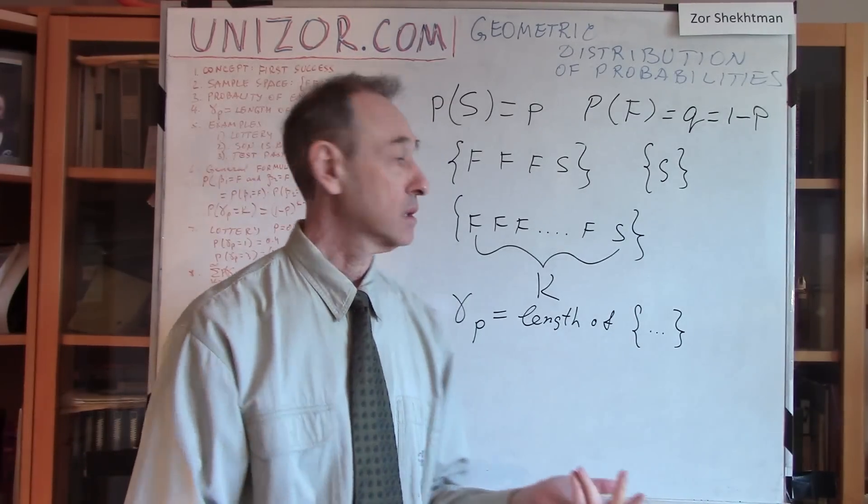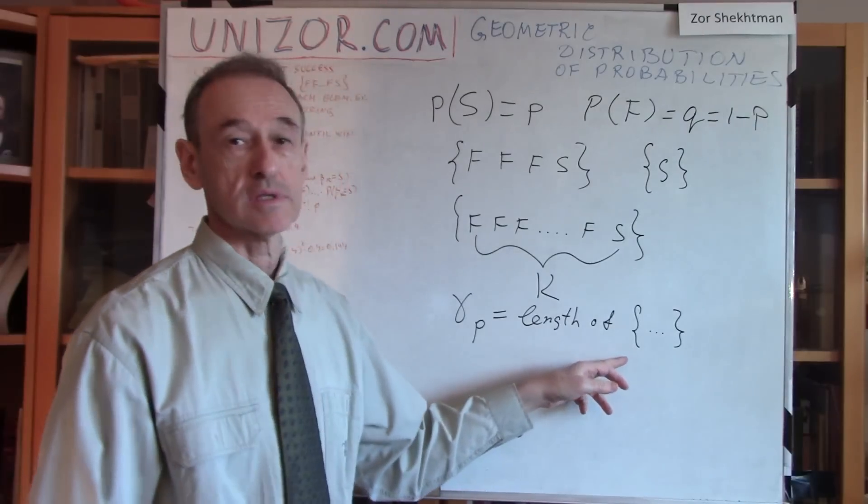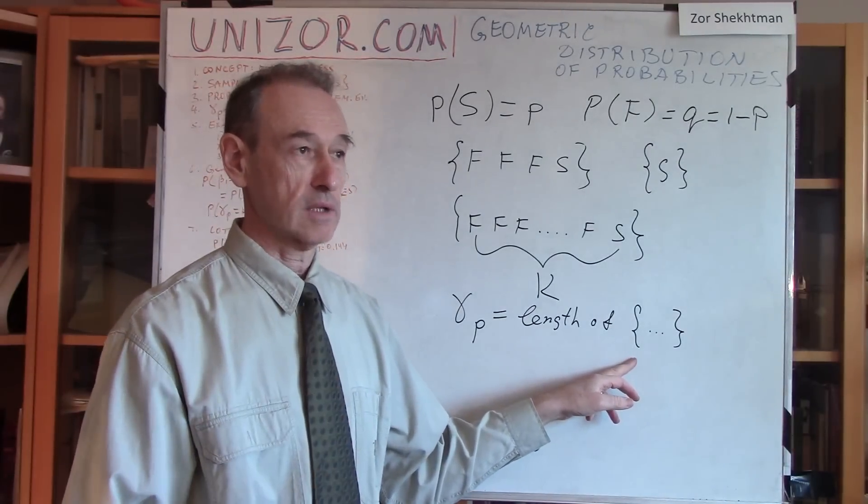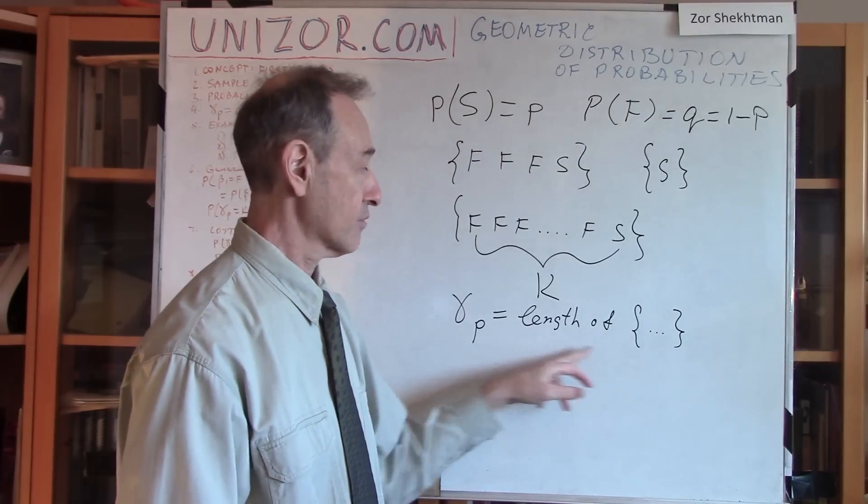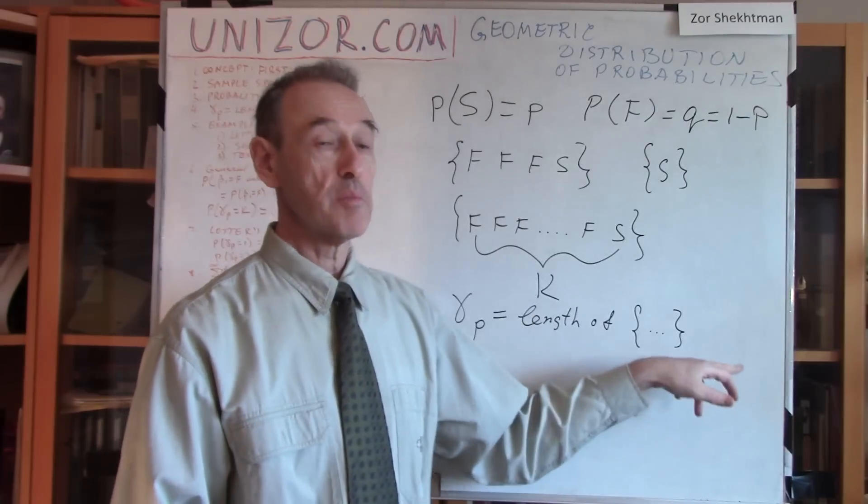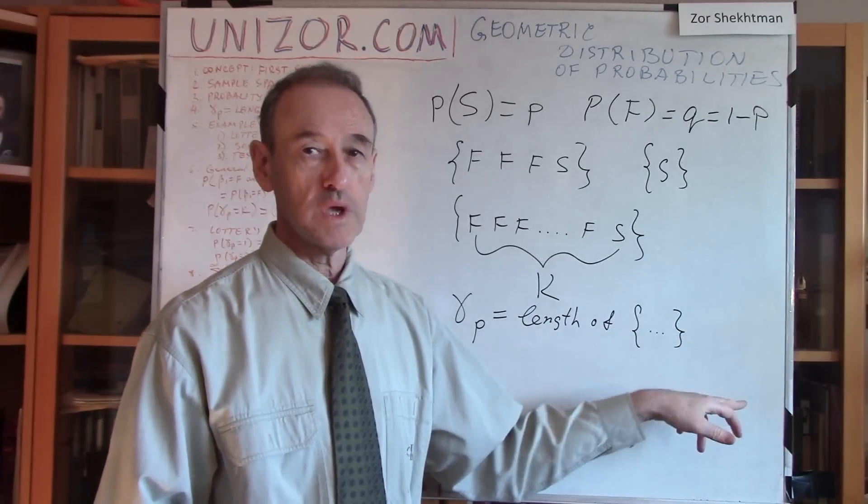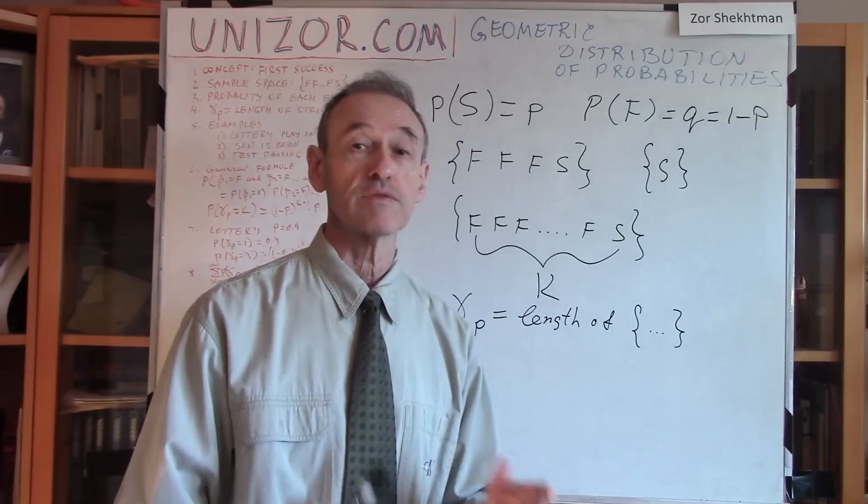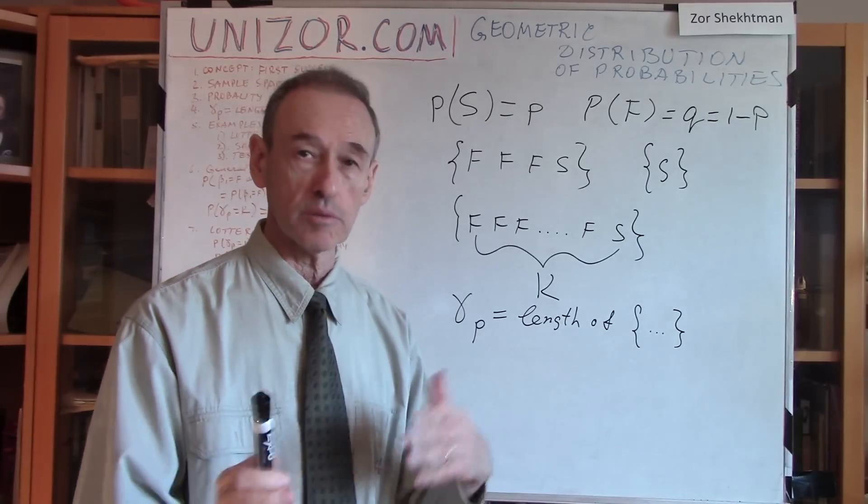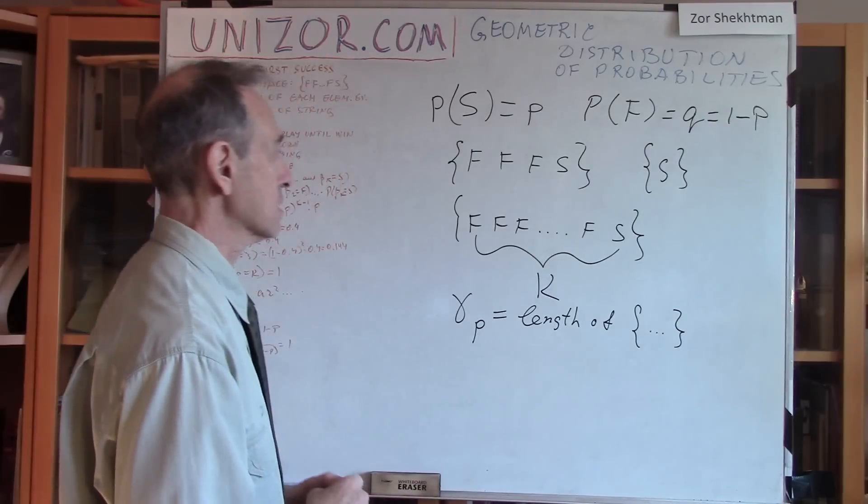Can it be a million? Well, it means that the previous 999,999 trials were failures, and on the millionth trial we had a success. So that's possible. The probability of this is probably low, but it depends on the probabilities, so in any case it is possible.